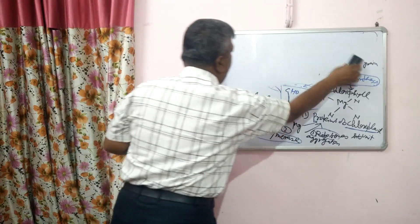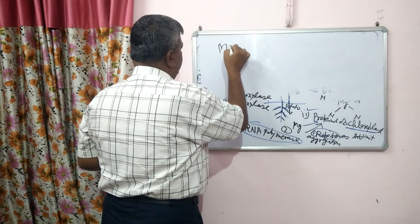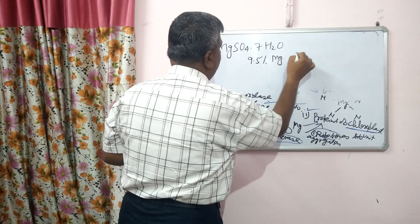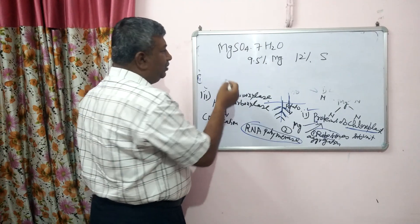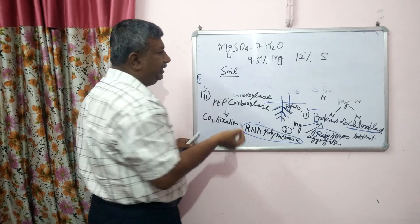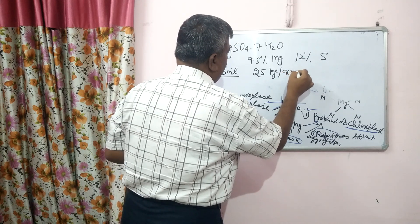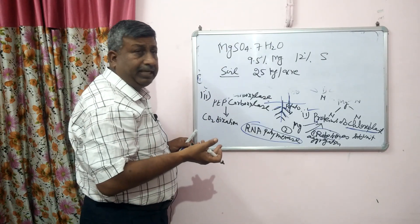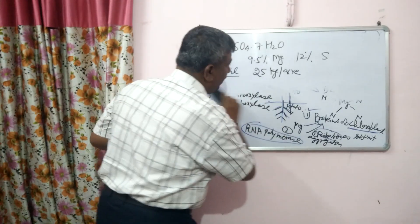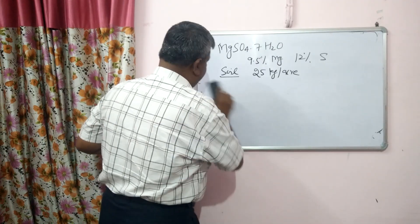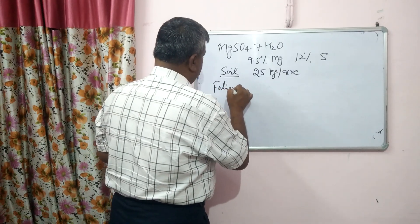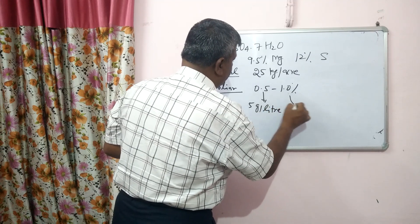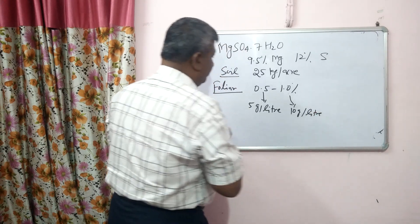The fertilizer we use to supply magnesium is Epsom salt — MgSO4·7H2O, magnesium sulfate heptahydrate. It contains about 9.5% magnesium and about 12% sulfur. For soil application, it requires a large quantity — about 25 kg per acre or 50 kg per hectare or even more — which makes soil application quite high. In practice, foliar application is more effective, at 0.5% to 1%, meaning 5 grams per liter to 10 grams per liter.